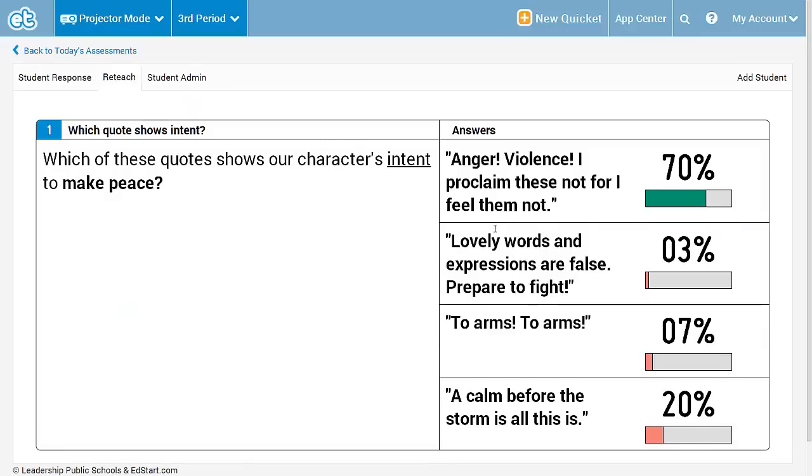Let's say I call on Beth Blackburn and I ask her why the last option tricked so many students and she shrugs and says I don't know. Instead of posing the same question to another student, I ask for a volunteer to explain what the question is asking and they say that we're looking for someone that doesn't want to fight and wants to make peace.